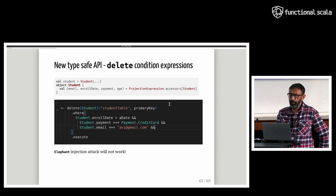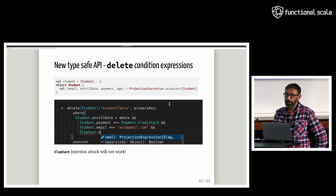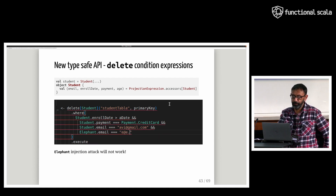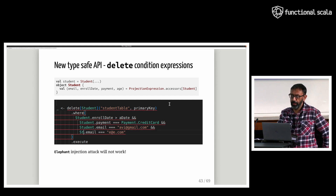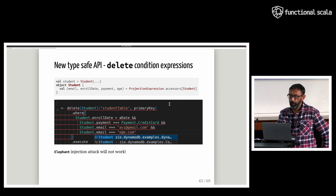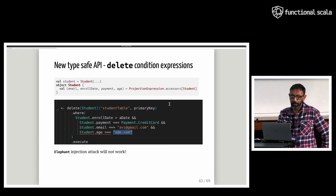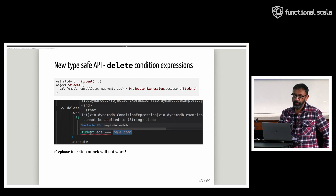Here we try to introduce a non-student condition expression and the compiler complains. When we change it to student.age but use the wrong type value on the right-hand side, again this gives us a compiler error.